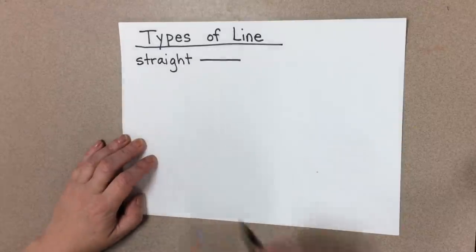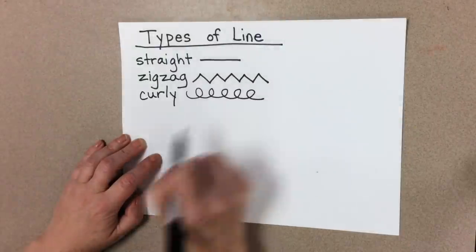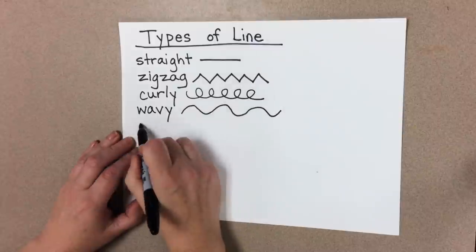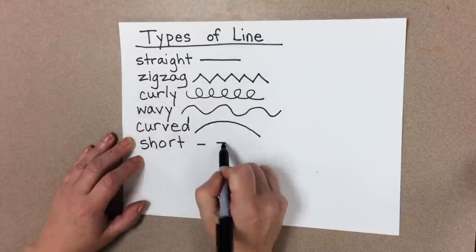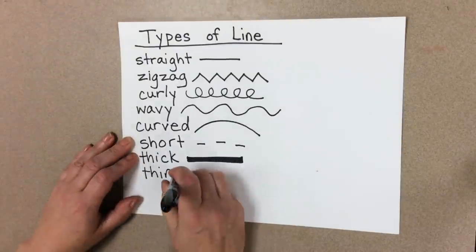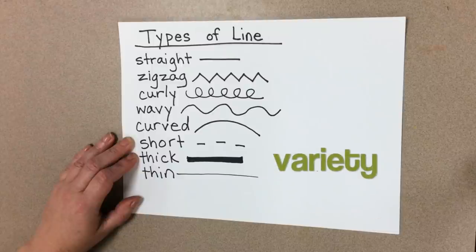Straight. Zigzag. Curly. Wavy. Curved. Short. Thick. Thin. And when we use a lot of different types, we call that variety.